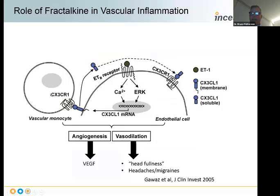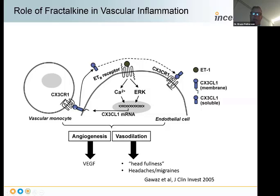Non-classical monocytes, with the phenotype CD14-low/CD16-high, also cause angiogenesis and elevated VEGF. Just about every long COVID patient we see has elevated VEGF. This also causes vasodilatation, which is the head fullness, headaches, migraines, brain fog, and tinnitus that we see in long COVID. When we block the binding of these non-classical monocytes using CCR5 antagonists and statins, which lower fractalkine, we see improvement in all symptoms related to vasodilatation and angiogenesis.